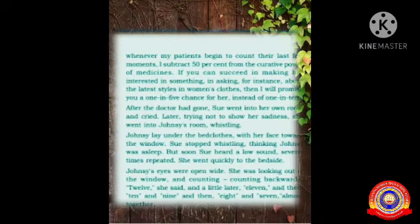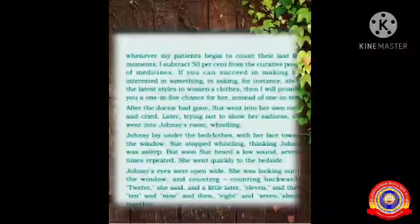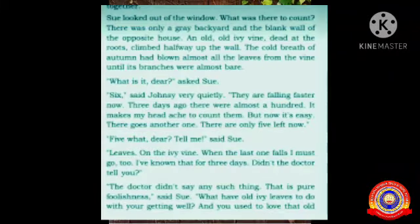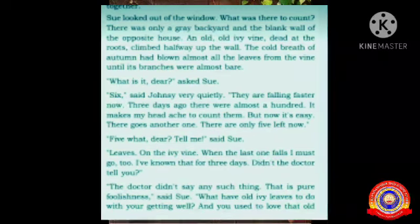And then 10, and 9, and then 8, and 7, almost together. Sue looked out of the window. What was there to count? There was only a grey backyard and a blank wall of the opposite house. An old, old ivy vine, dead at the root, climbed halfway up the wall. The cold breath of autumn had blown almost all the leaves from the vine, until its branches were almost bare.